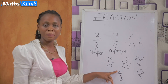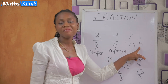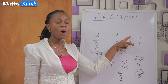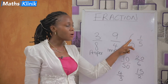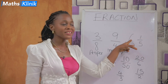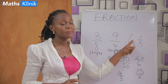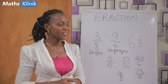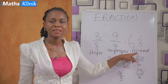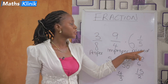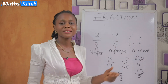And the last fraction — I have a whole number and a proper fraction together. When you have a whole number and a proper fraction, we call it mixed fraction. Mixed. When you have a whole number and a proper fraction, we call it mixed fraction.